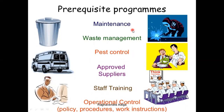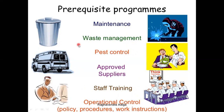Along with those, maintenance and waste management are very important prerequisite programs. Then pest control system — most industries have chances of different pests and insects, so their control is very important. Then approved suppliers, supply vehicles, and staff training. Whatever people are working in that industry should be provided with a training program so that they will work properly with proper care. Then operational controls regarding policy, procedures, and work instructions are all important programs related to any food processing industry.